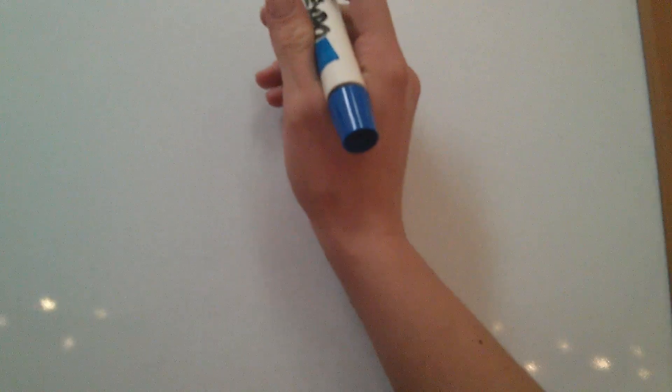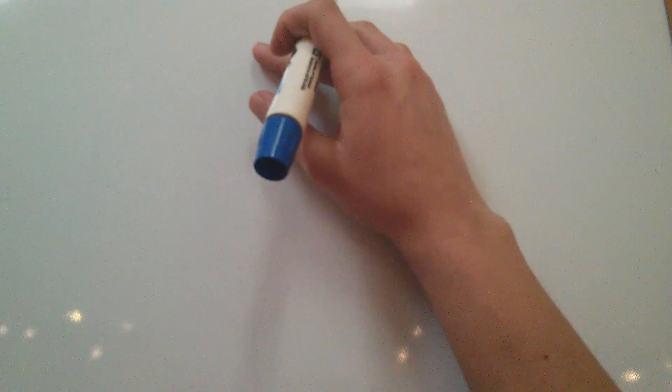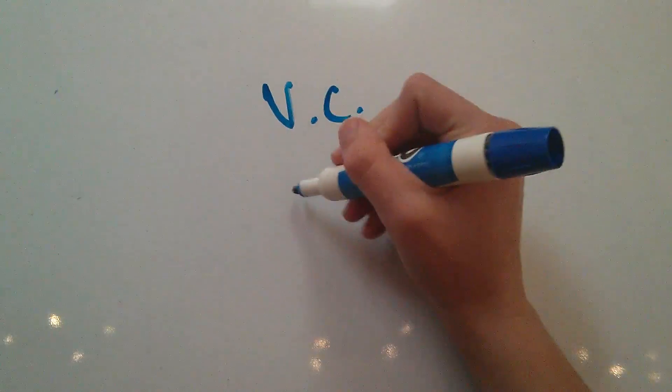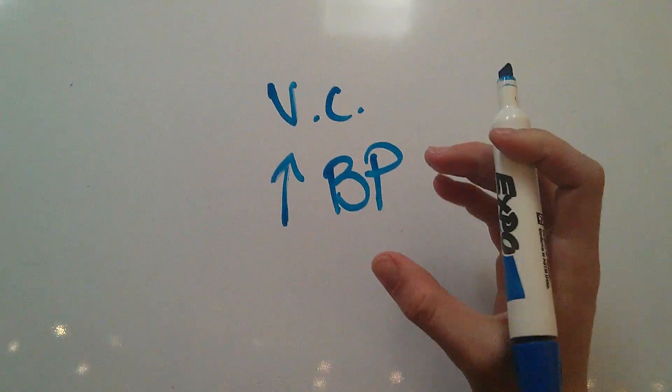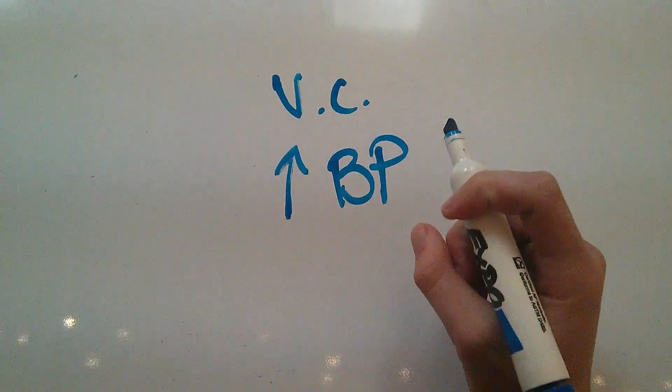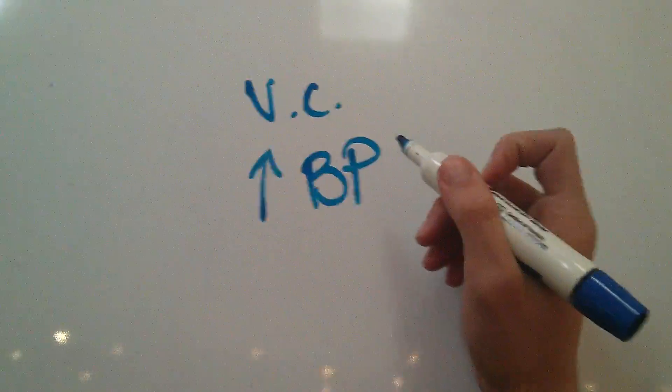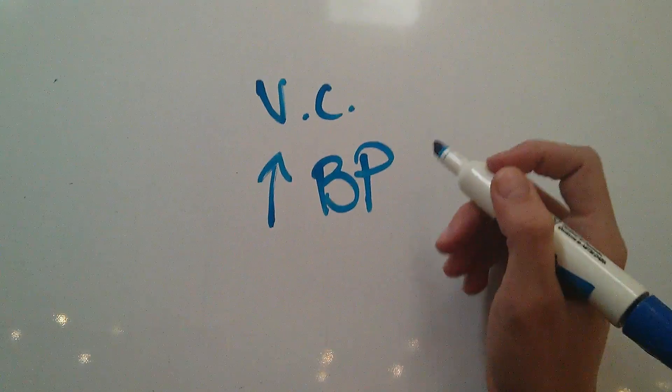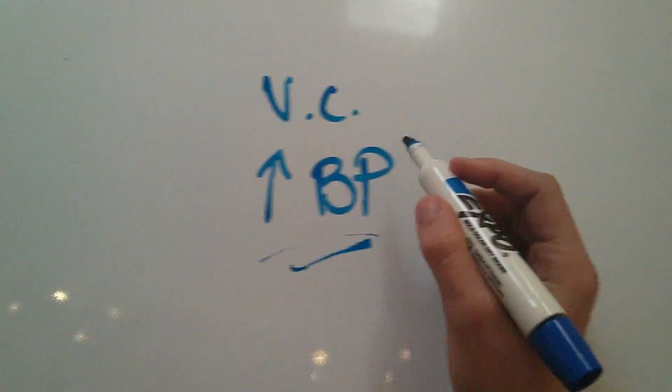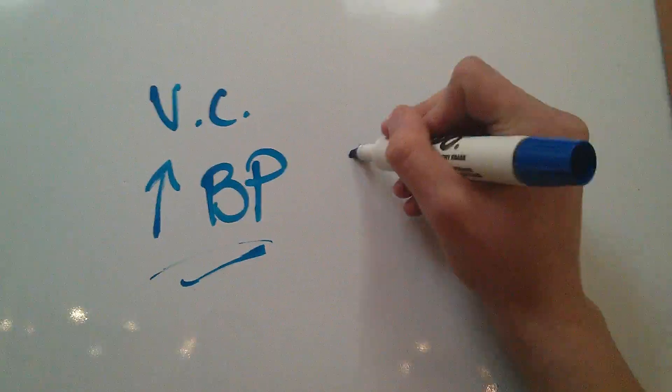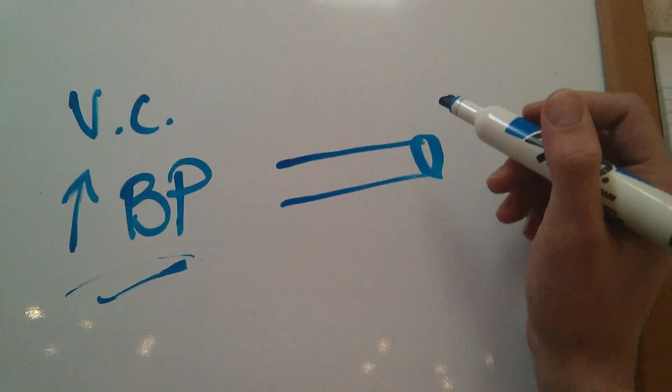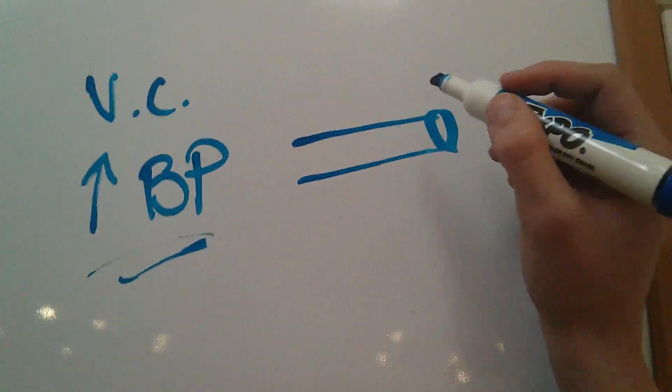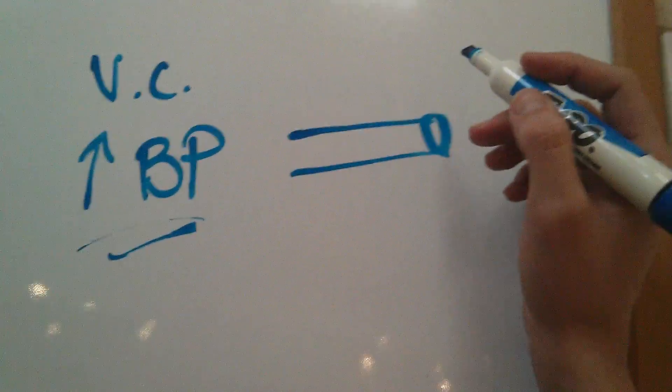This vasoconstriction is going to lead to an increase in blood pressure, because when the arteries and vessels get smaller, the pressure increases. After a while, this increase in blood pressure is going to cause wear and tear on these blood vessels. Your blood vessels were not designed to have to withstand such elevated pressure over a long period of time.